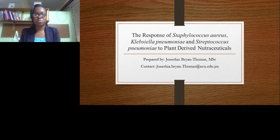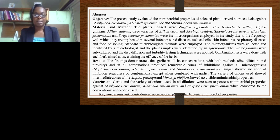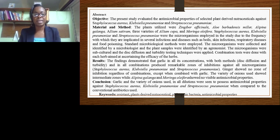This particular research looked at ginger — the official name is Zingiber officinale — Aloe barbadensis, Allium sepa, three varieties of Allium sativum. These varieties of plant nutraceuticals were used as though they were antibiotics on Staphylococcus aureus, Klebsiella pneumoniae, and Streptococcus pneumoniae.